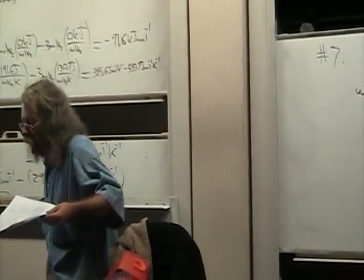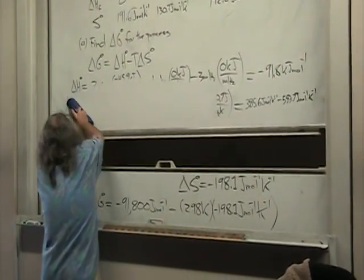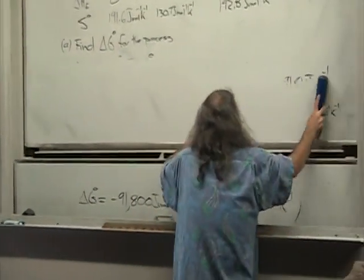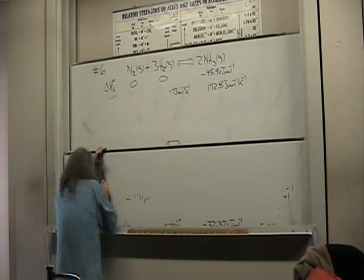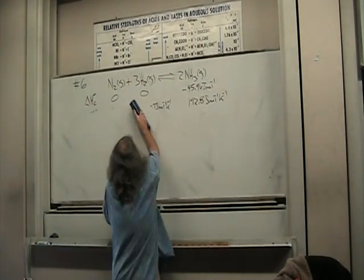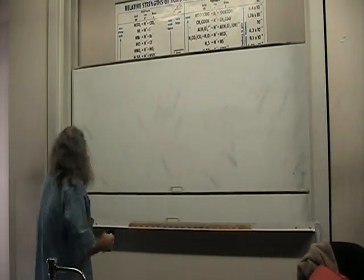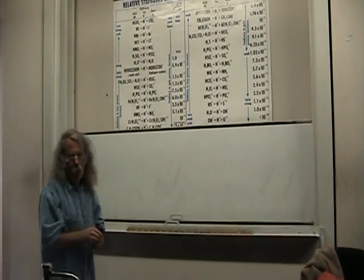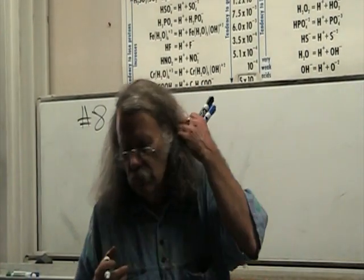The next problem is a drill in working with logs and takes advantage of the fact that under standard conditions, 2.303 RT is equal to 5.7. Number 8. We'll probably do all A, B, and C on this one, although we could break it up.